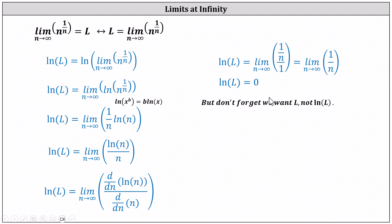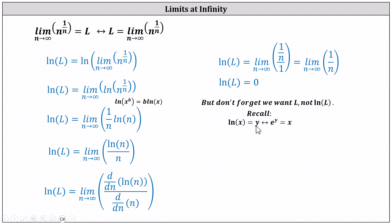But don't forget we're looking for L, not natural log L. So we'll have to solve this log equation for L by writing it as an exponential equation. Remember that natural log x equals y is equivalent to e to the power of y equals x — natural log is base e, and a logarithm is an exponent. This indicates natural log L equals zero is equivalent to e raised to the power of zero equals L.